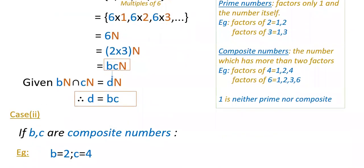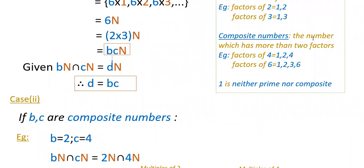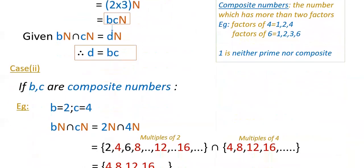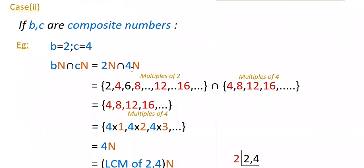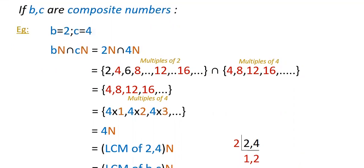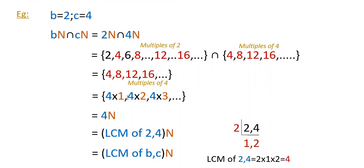In the second case, if B and C are composite numbers — composite numbers have more than two factors, for example 4, 6, 8, 10, 12. Note that 1 is neither prime nor composite. Take B=2 and C=4 as composite numbers. Then 2N ∩ 4N: multiples of 2 are {2,4,6,8,...} and multiples of 4 are {4,8,12,16,...}. The common elements are 4, 8, 12, 16, etc. — multiples of 4. So we can write this as 4N, where 4 is the LCM of 2 and 4.